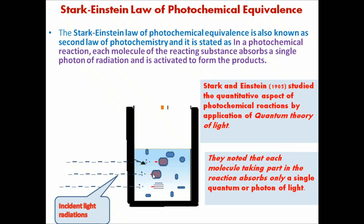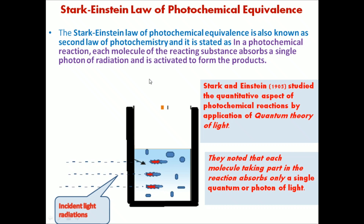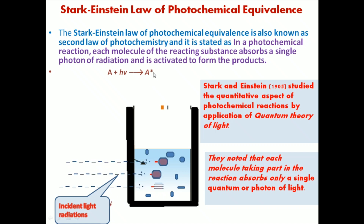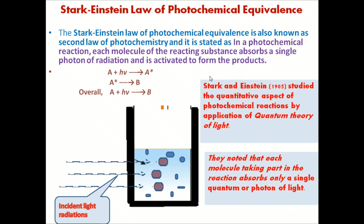The Stark-Einstein law, commonly known as the second law of photochemistry, states that in a photochemical reaction each molecule of a reacting substance absorbs a single photon of radiation and is activated to form a product. For example, a molecule A absorbs a photon of radiation h-nu, then it gets excited to a higher energy level. This excited molecule A at the higher energy level then gets converted to product B. Overall, molecule A after absorption of one photon of radiation is converted to product B.